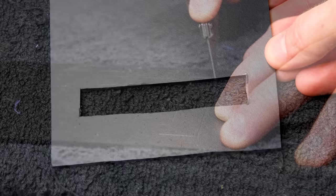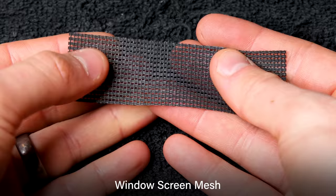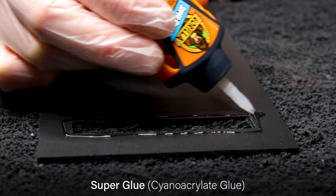This could work, but it requires a barrier to keep fine particles out. That's where this window screen comes into play. With a little bit of super glue, I secured it along the back side of the opening.